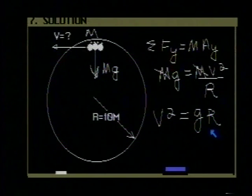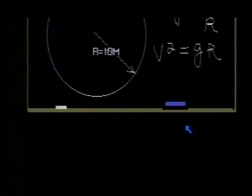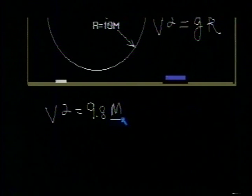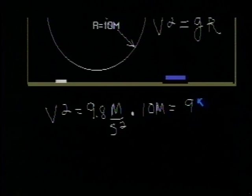Let's put in some values for G and R. V squared is equal to 9.8 meters per second squared multiplied by R, which is 10 meters. This gives me 98 meters squared per second squared.